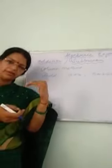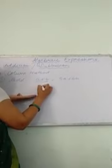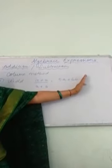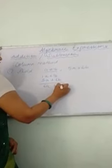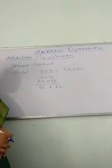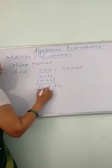In the column method, we write the terms in column format. For example, adding a plus b and 5a plus 6b: first write a plus b, then write 5a below a since they are like terms, and 6b below b. The coefficient of a is 1, so 1a plus 5a is 6a, and 1b plus 6b is 7b. So the answer is 6a plus 7b.